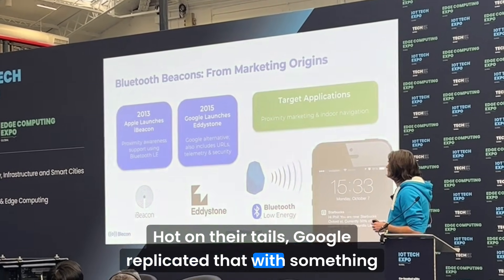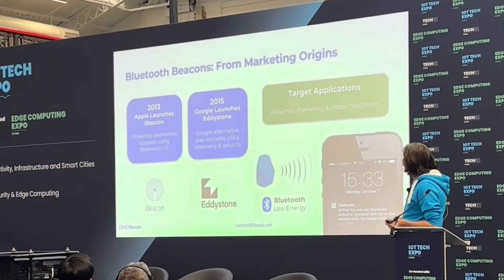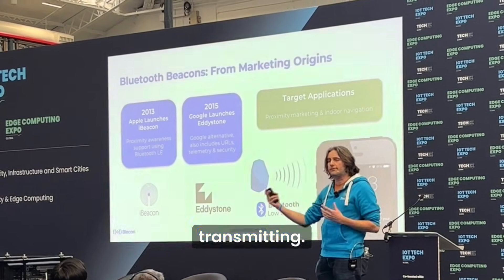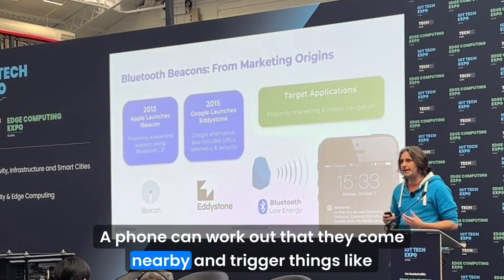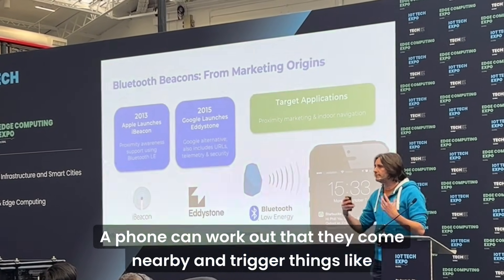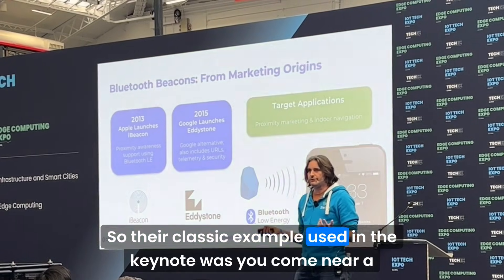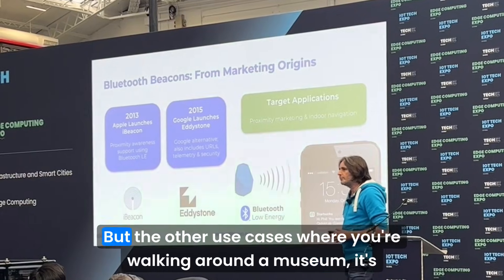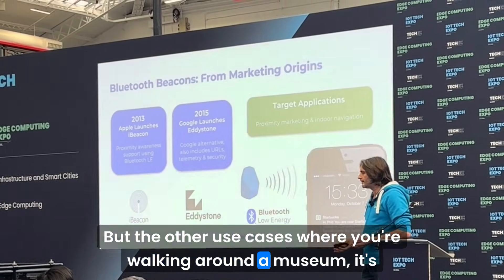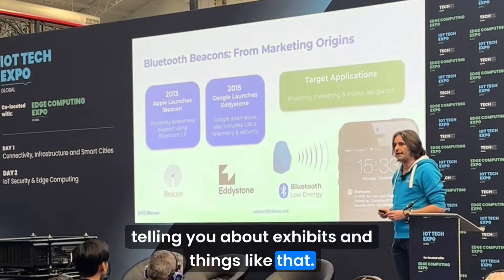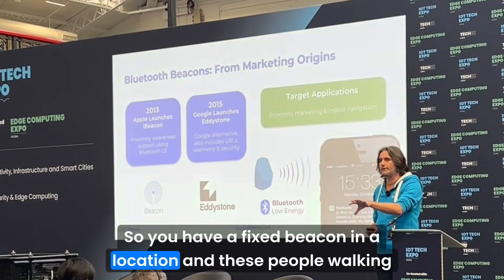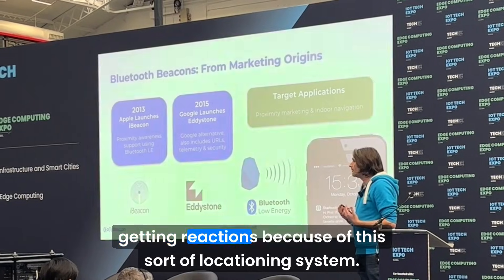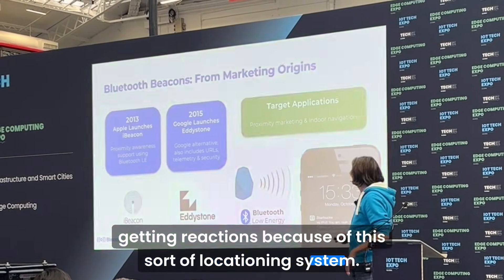Google replicated that with something called Eddystone. These are Bluetooth Low Energy devices transmitting so a phone can work out that it has come nearby and trigger interactions. The classic example used in the keynote was you come near a Starbucks, it gives you a voucher. Another use case is walking around a museum where it tells you about exhibits.